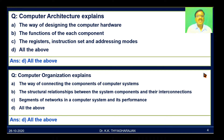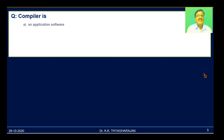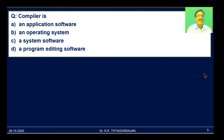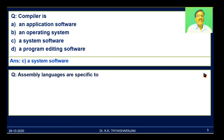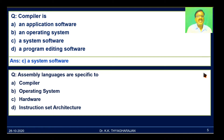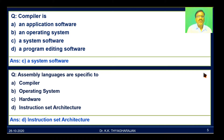Next question: compiler is — A, an application software; B, an operating system; C, a system software; D, a program editing software. Compiler and assemblers are system software, so C is the correct answer. The next question: assembly languages are specific to — A, compiler; B, operating system; C, hardware; D, instruction set architecture. Assembly languages are specific to the instruction set — for each processor, we will have a different assembly language and a different instruction set. So D is the correct answer.